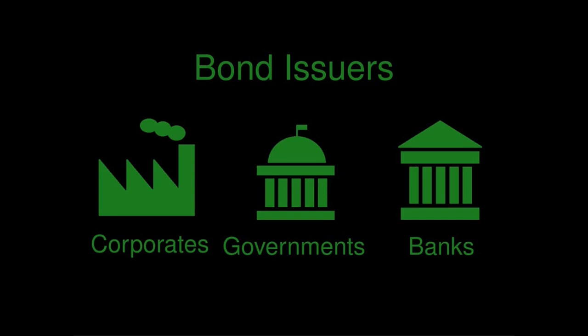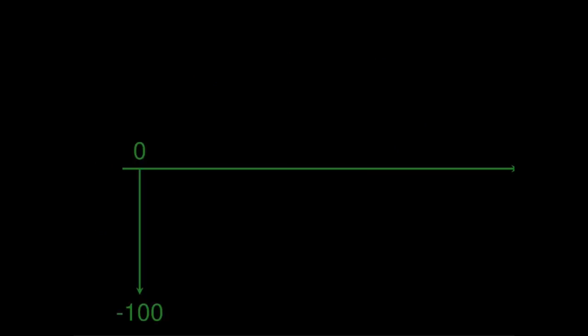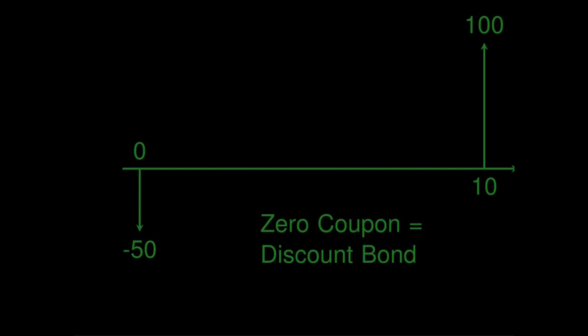Let's look at a 10-year bond example. The buyer of the bond lends $100 to the issuer today and gets it back in 10 years. But would you accept just that as a lender? Probably not — you need to be paid interest as compensation for your risk. The first possibility is that the bond is issued at a discount, so below its face value of 100. In this case, the interest is accumulated over the life of the bond and is paid at maturity as the full notional. We call this a discount bond, as it is normally issued at a discount, or a zero-coupon bond, as it pays no coupon.